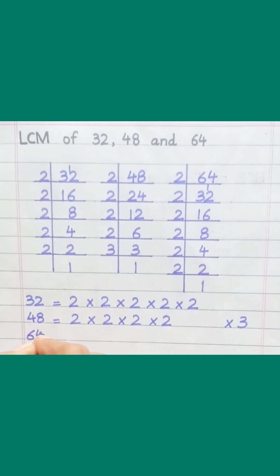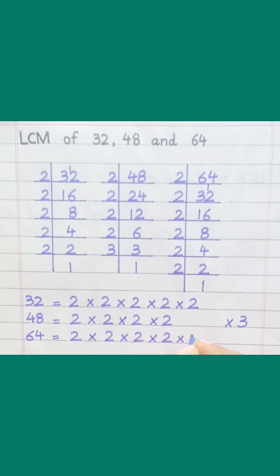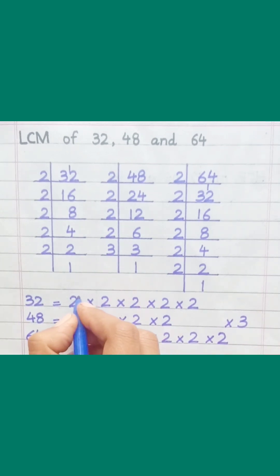64 equals 2 multiply 2 multiply 2 multiply 2 multiply 2 multiply 2.